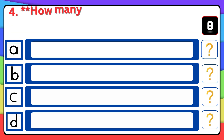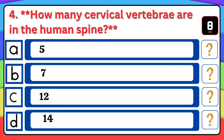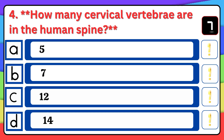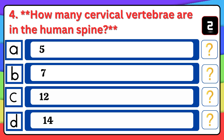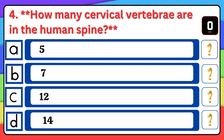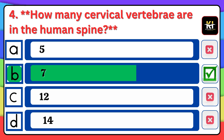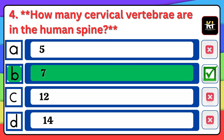Question number four: How many cervical vertebrae are in the human spine? Correct answer: Option B — Seven.